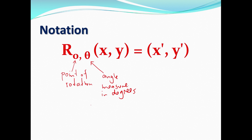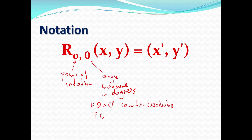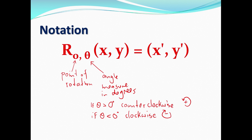Something worth noting: if theta is greater than zero degrees — say, positive 30 degrees — then you're rotating counterclockwise. If angle theta is negative — say, negative 45 degrees — you're rotating the object clockwise. Counterclockwise is positive and clockwise is negative. It seems a little counterintuitive, but that is the notation in mathematics and also in physics.